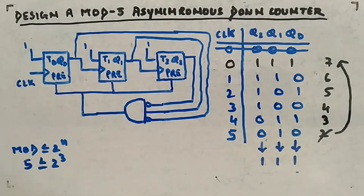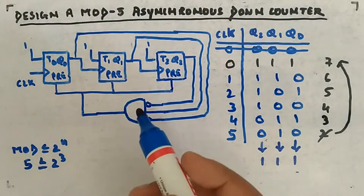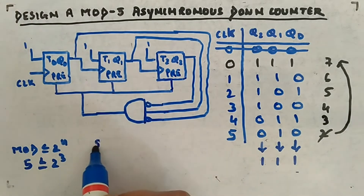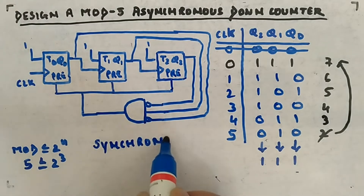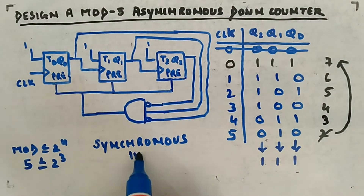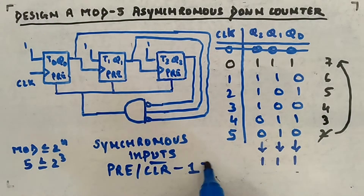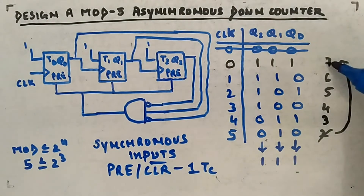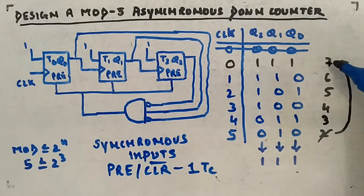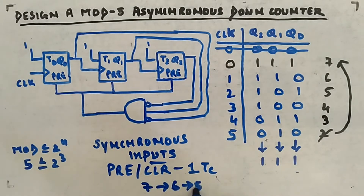One more thing I forgot to mention: we have seen preset and clear as asynchronous inputs. If someone tells you they are synchronous inputs — where preset is active high and clear is active low — then it will take one more extra clock cycle. What we have seen: it counts 1,2,3,4, and then on the 5th clock cycle it automatically goes to 7. But with synchronous input, it would go 7, 6, 5, 4, 3, then 2, then 7.